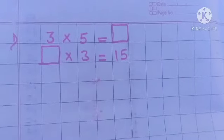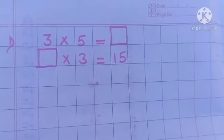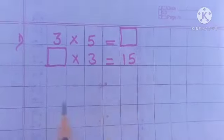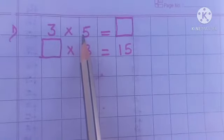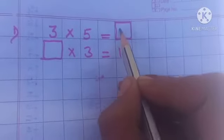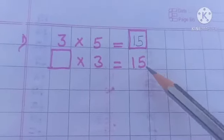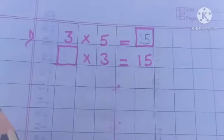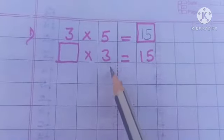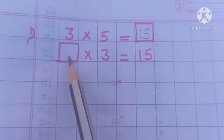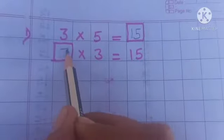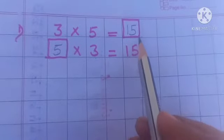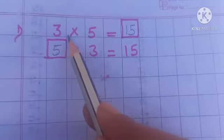Let's solve one more example. As we know, if we change the order of numbers we get the same answer. Look here: three into five is equal to 15. Now if we change the order of the numbers — 3 and 5 — five times three is 15, and three times five is 15. We get the same answer when we change the order.